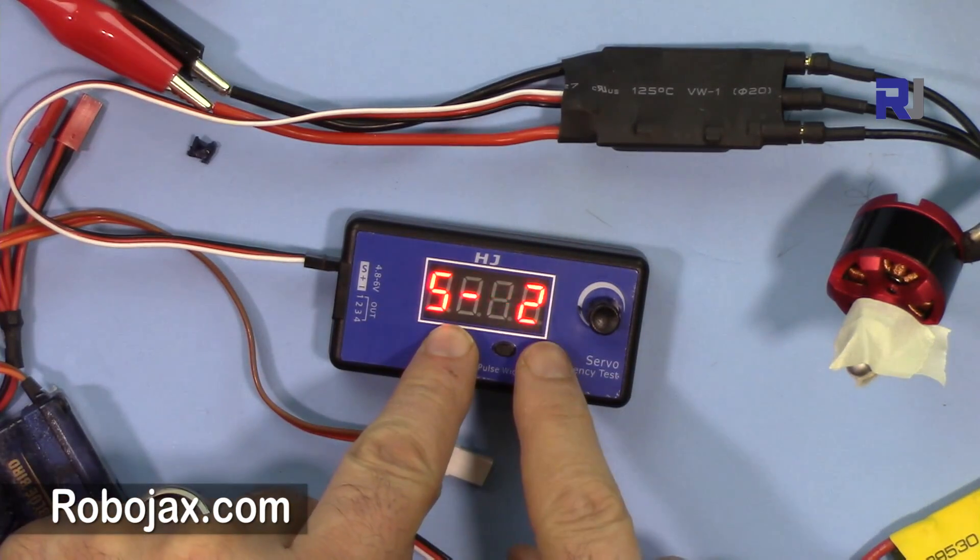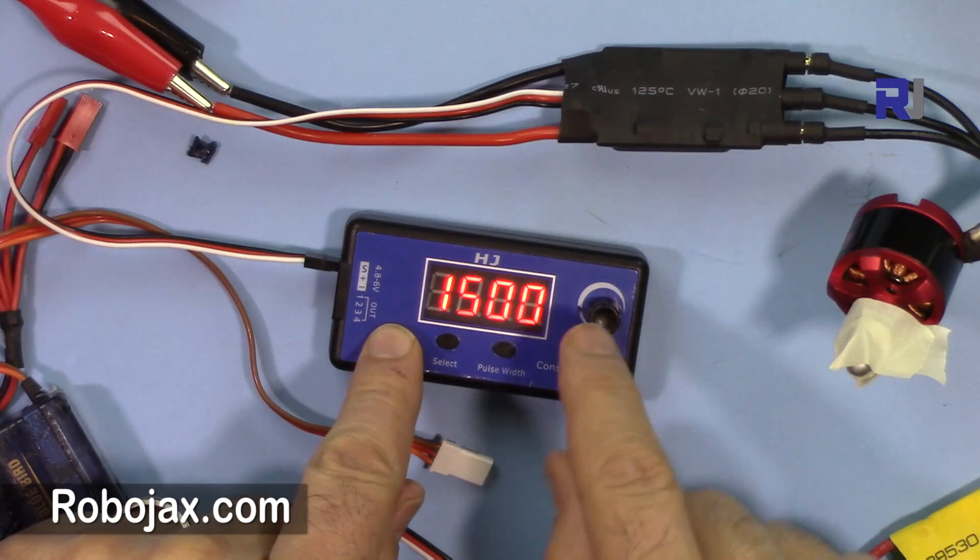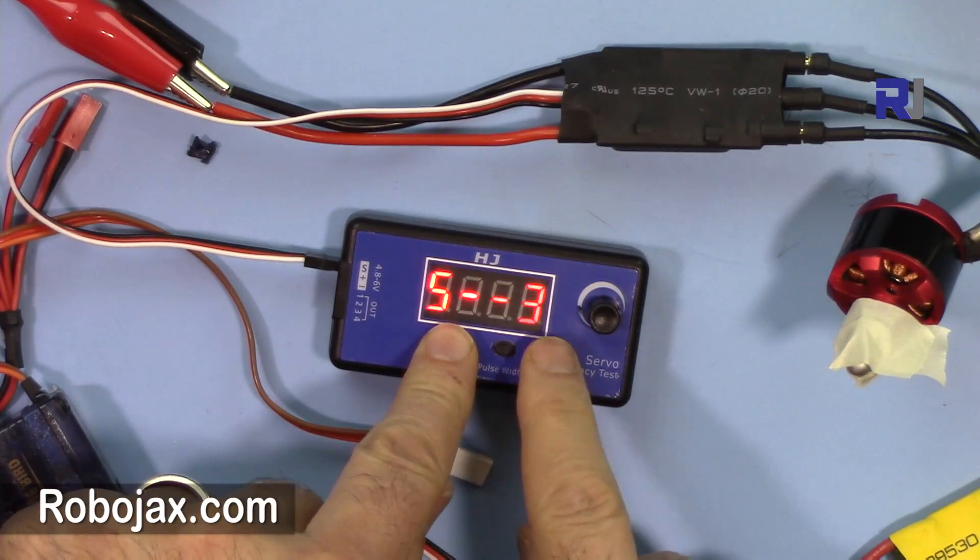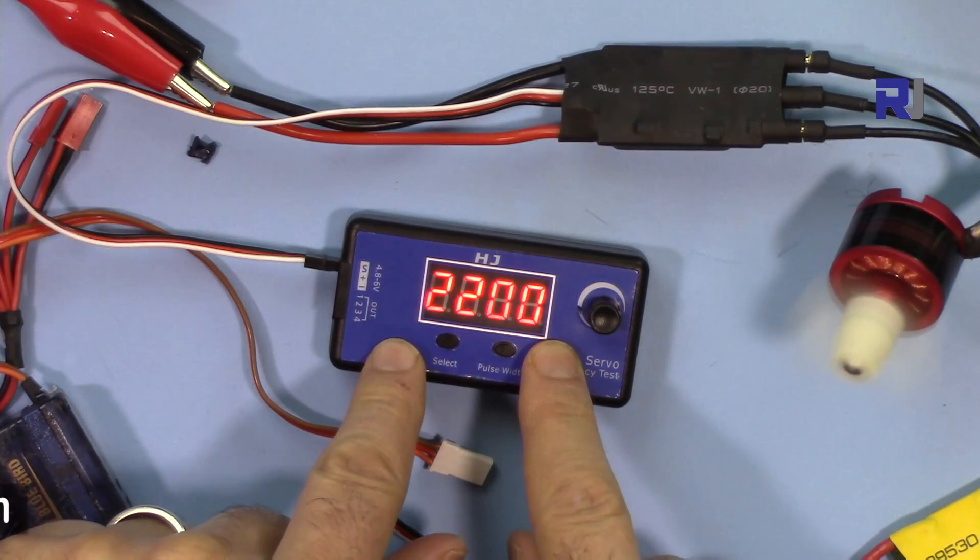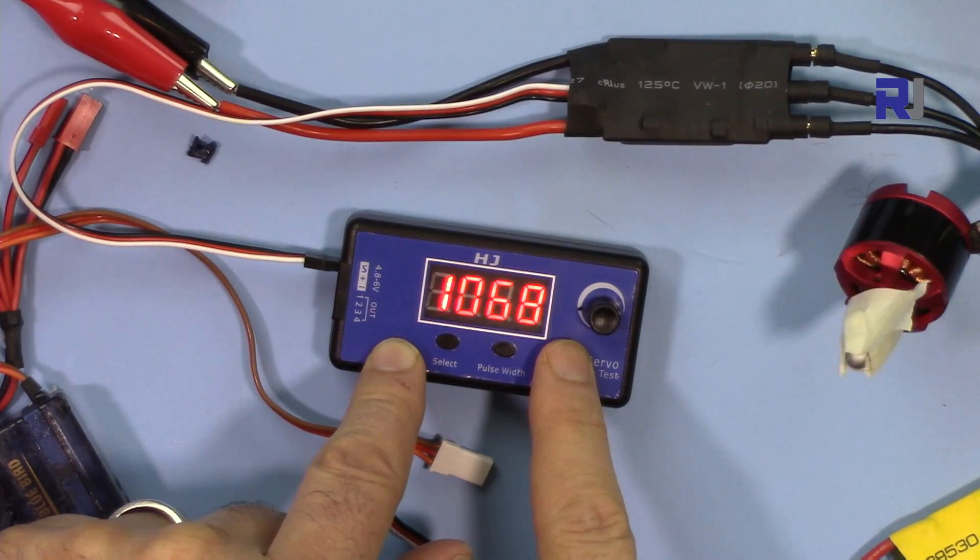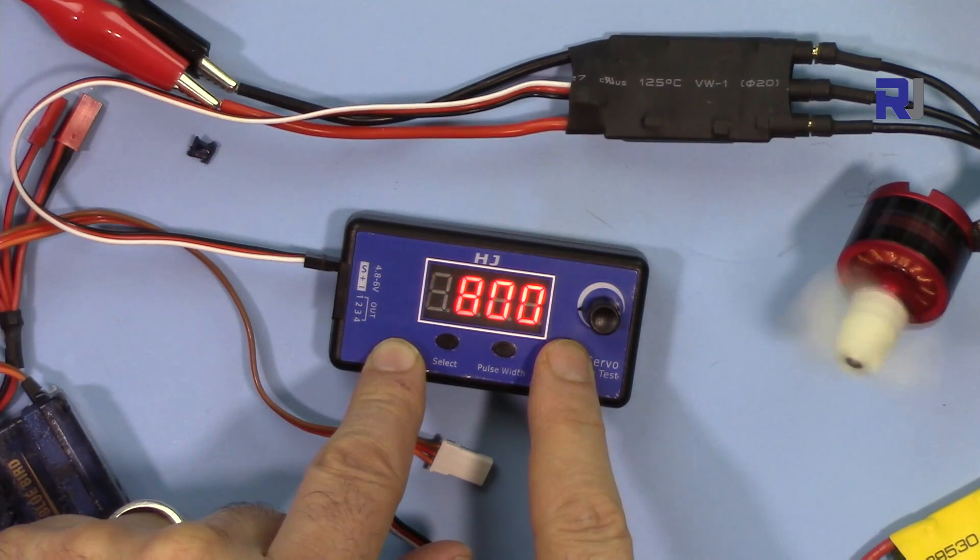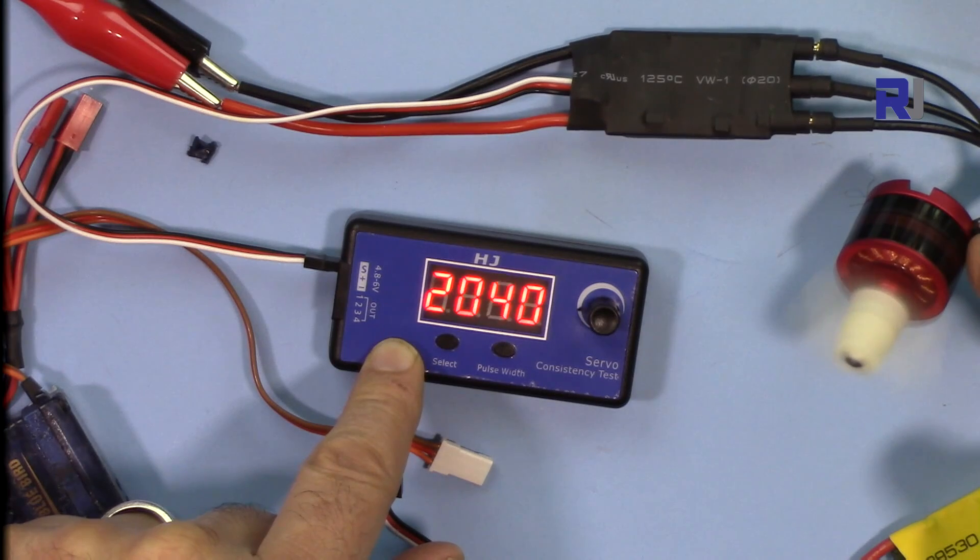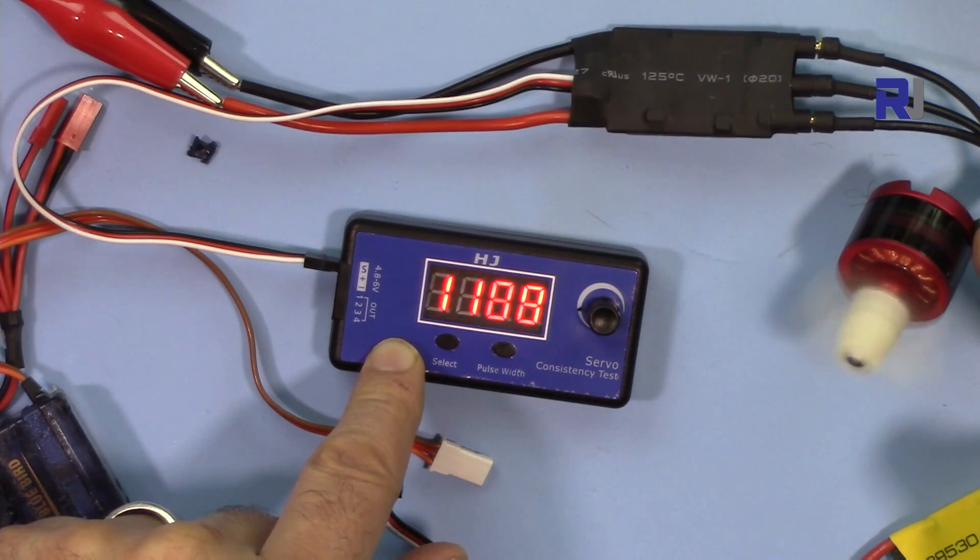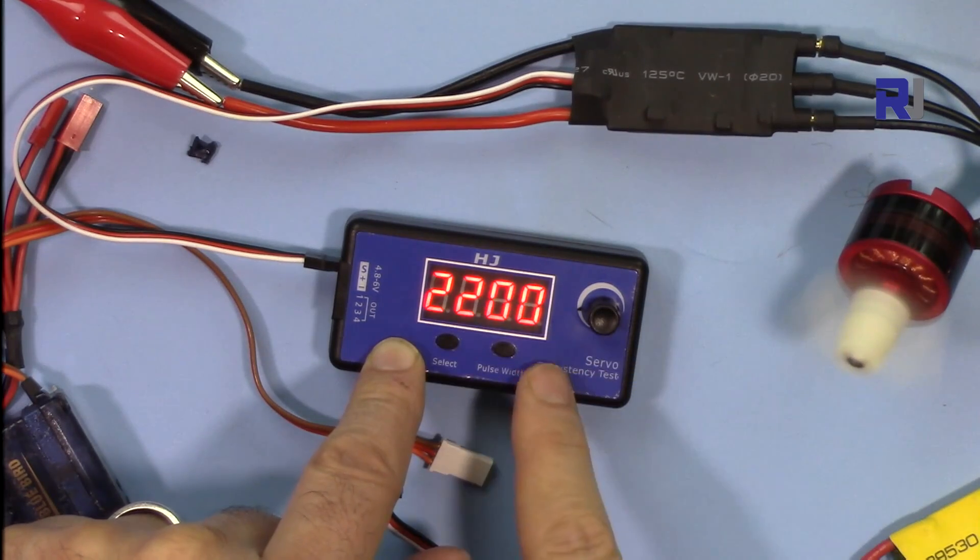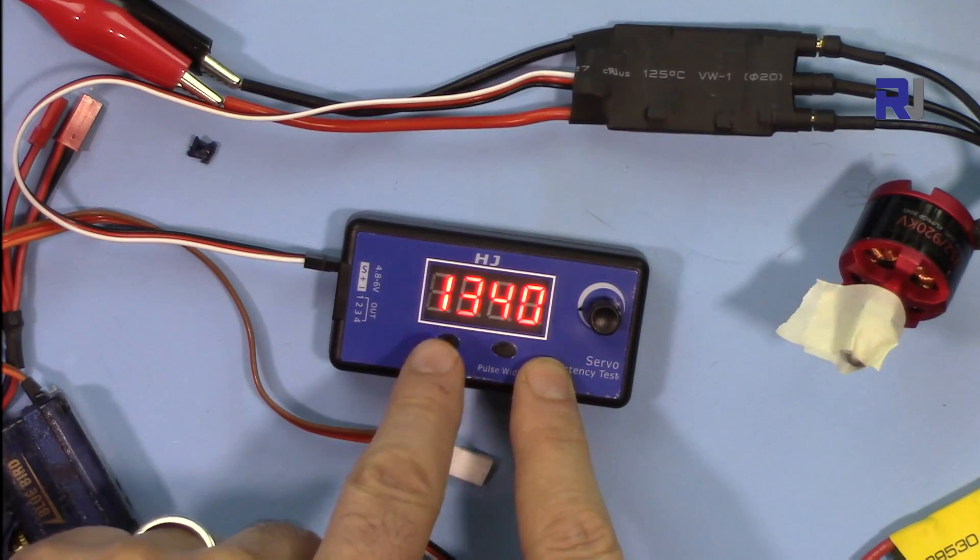Let me show you. Now this is the middle, 1500, so it just stays there. Doesn't matter. Now mode 3, which is automatic. This is just, the motor does not change the rotation, reverse. It just increases and then stops.